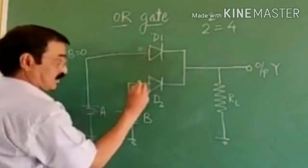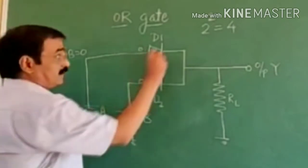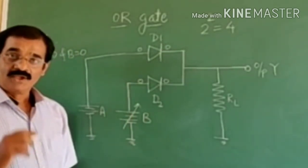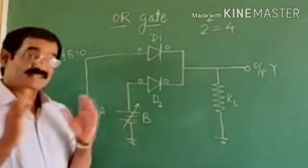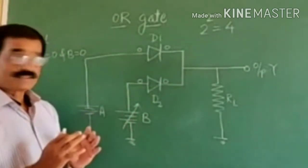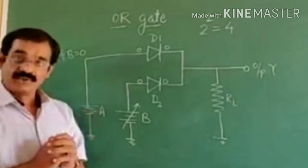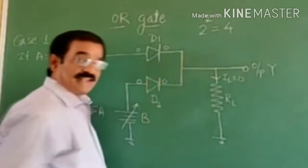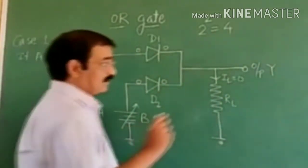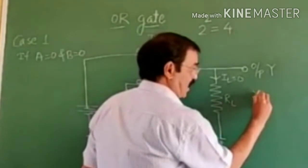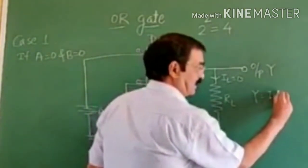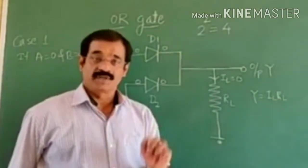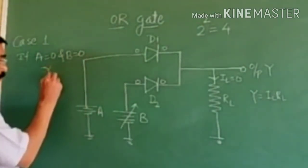So the voltage at the anodes of both diodes is also 0. The cathode voltage of both diodes is also 0, so both D1 and D2 remain reverse biased. Hence no current flows through diodes D1 and D2, and hence no current flows through the load resistance R1. The output voltage Y is equal to IL into R1, and as IL is 0, the output voltage is also 0. That means Y equals 0.